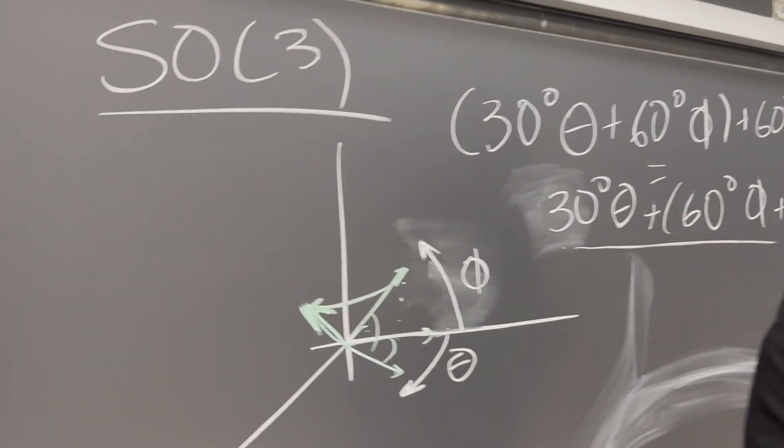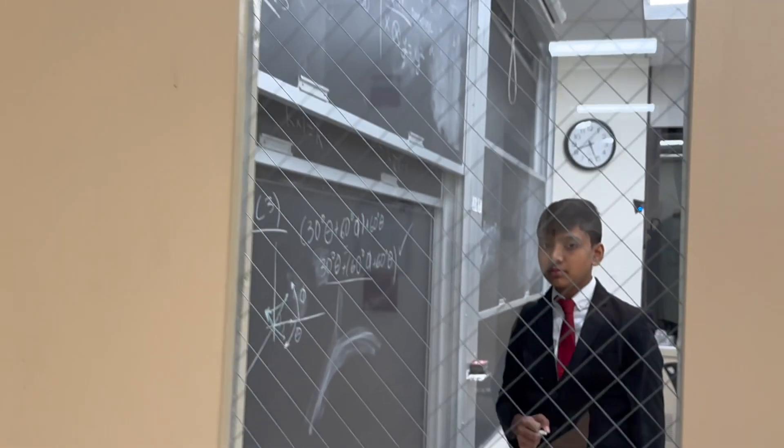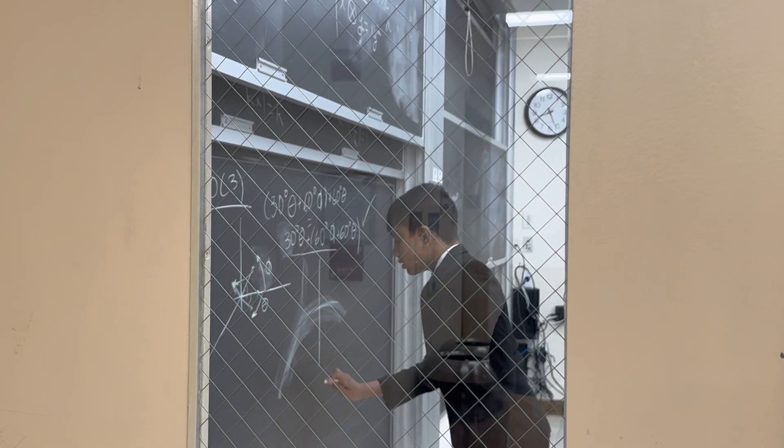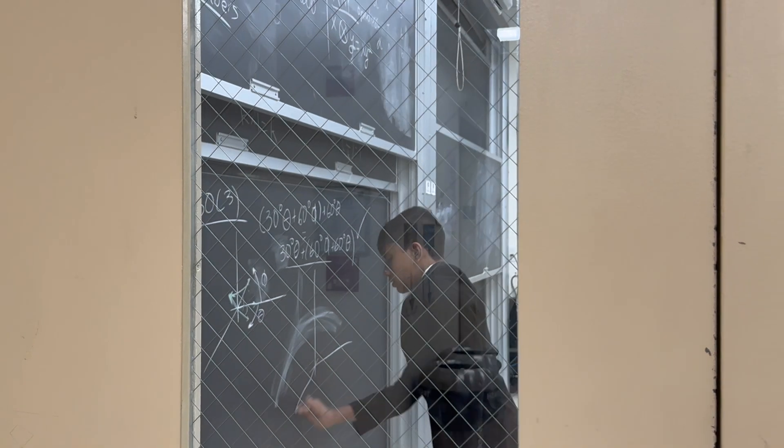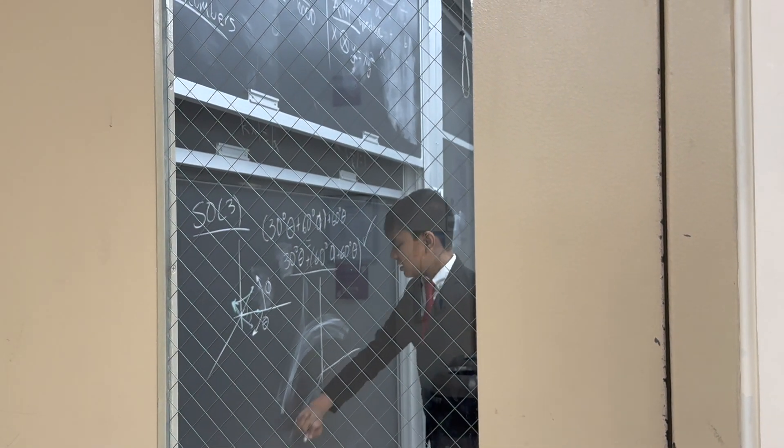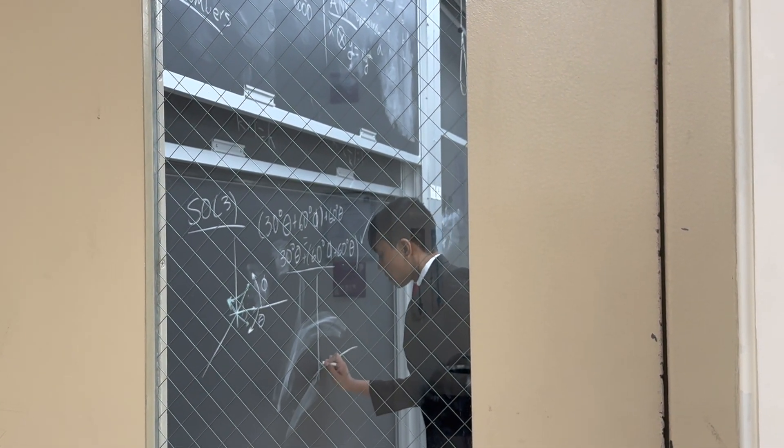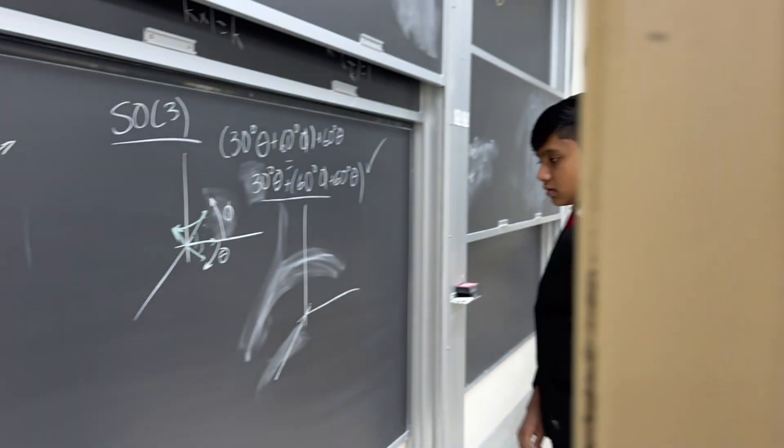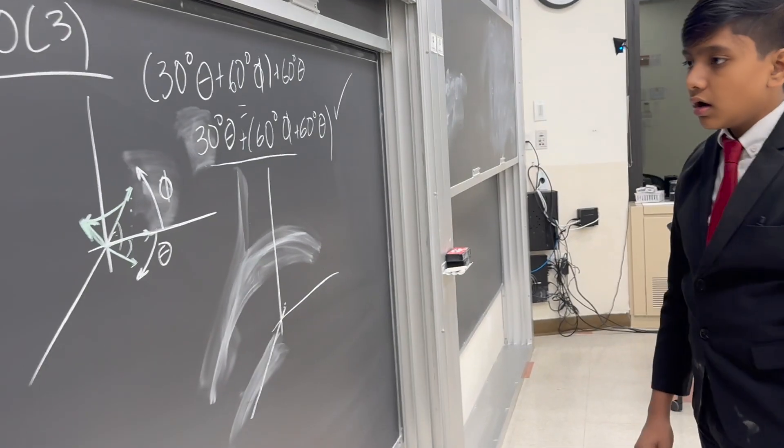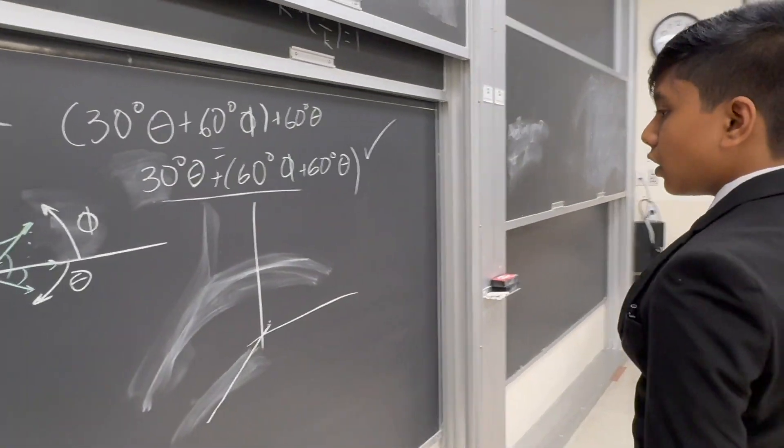But is it commutative? Well, I'll show you. First of all, let's set rotation A to be, say, this direction. So, 90 degrees theta.